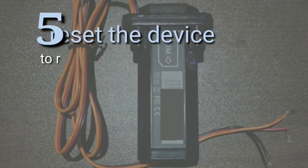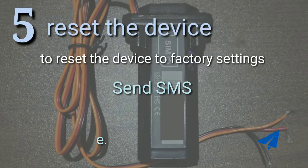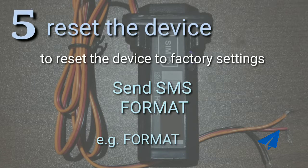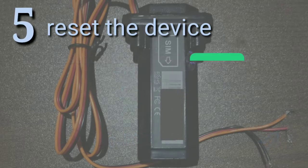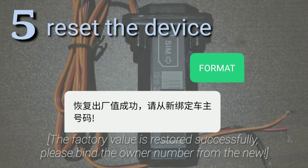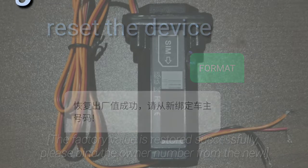To reset the device to factory settings, write FORMAT and just send it as SMS. The device must respond through an SMS saying: the factory value is restored successfully, please bind the owner number from the new.